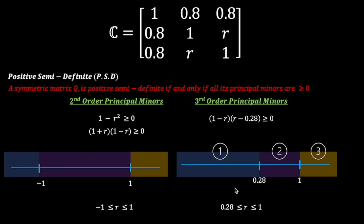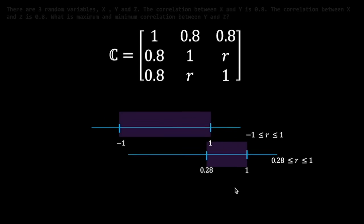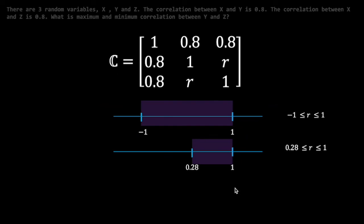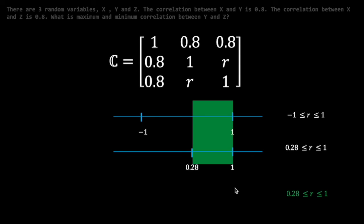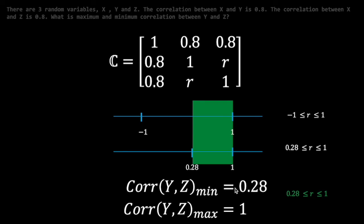Solving for r that satisfies the third order principal minor, the values of r can be split into three regions, and only region 2 satisfies the inequality. Hence the range of r for the third order principal minor is greater than or equal to 0.28 and less than or equal to 1. To satisfy both inequalities, r must be in the intersection of both solution sets, giving r greater than or equal to 0.28 and less than or equal to 1. Hence the minimum correlation between y and z is 0.28 and the maximum is 1.